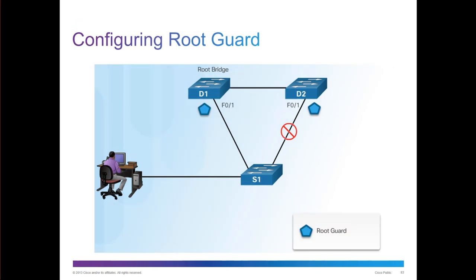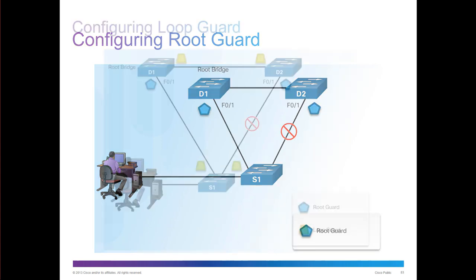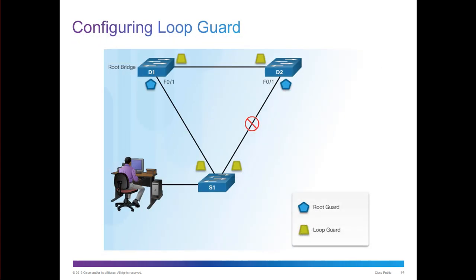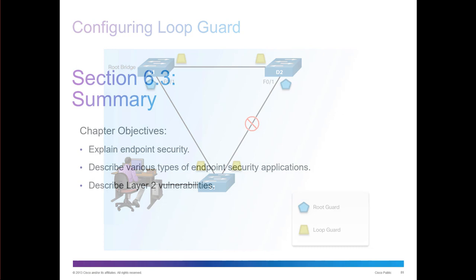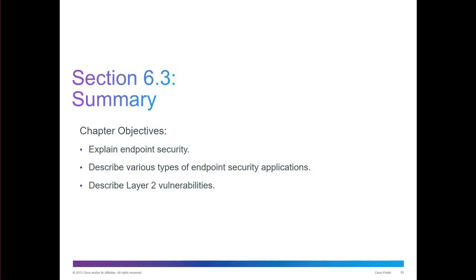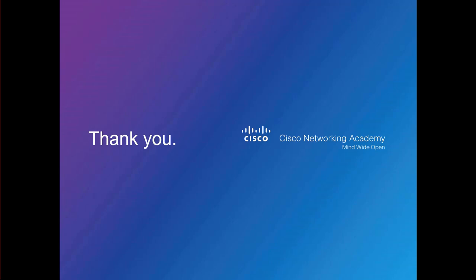Configuring root guard: on the root bridge you tell it that it is the root guard, and you can set root ports to become root guards. You can also have loop guards on ports to prevent loops. This is Chapter 6 in a nutshell — it will make more sense when we get to our labs and actually start seeing the Layer 2 prevention technologies. If you have any questions, please let me know. Thank you.